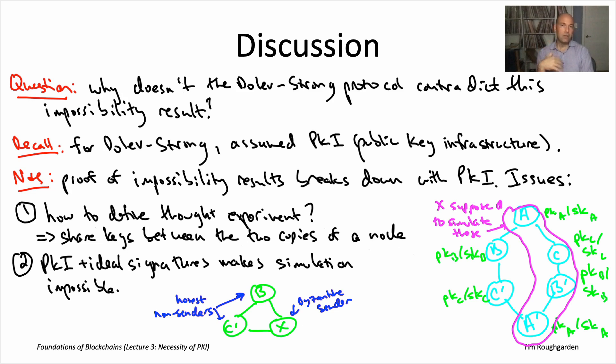But people only know their own private key. So the Byzantine node capital X knows its private key, it can sign on its own behalf, obviously. But it doesn't know the private key of B or C prime. And remember under the ideal signatures assumption, by virtue of not knowing either B or C prime's private key, X cannot create any message with a valid signature by either of those two nodes.